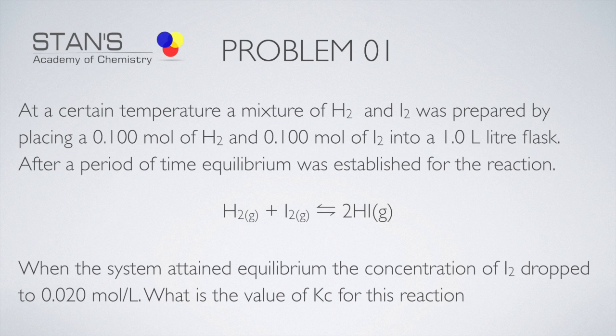You are given the number of moles of hydrogen and iodine, which are the same—in this case, 0.1 mole each. The volume of the container is 1 liter, therefore the concentration becomes 0.1 mole per liter. You are also provided with the equilibrium concentration of iodine that is present in the reaction mixture.